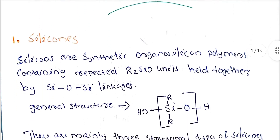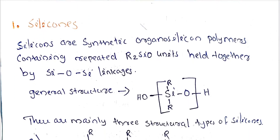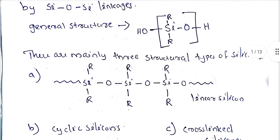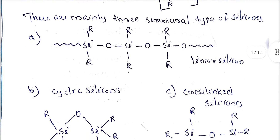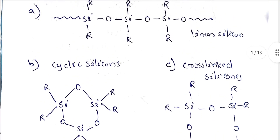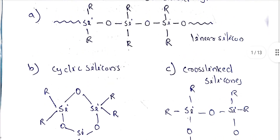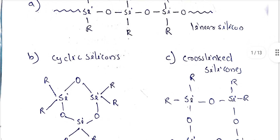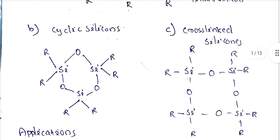In our first discussion: what are silicones? Silicones are synthetic organo-silicon polymers containing repeated R2SiO units held together by Si-O-Si linkages. This is the general structure. There are mainly three structure types of silicones: linear silicone (R-Si-R-O chain), cyclic silicone, and cross-linked silicone.